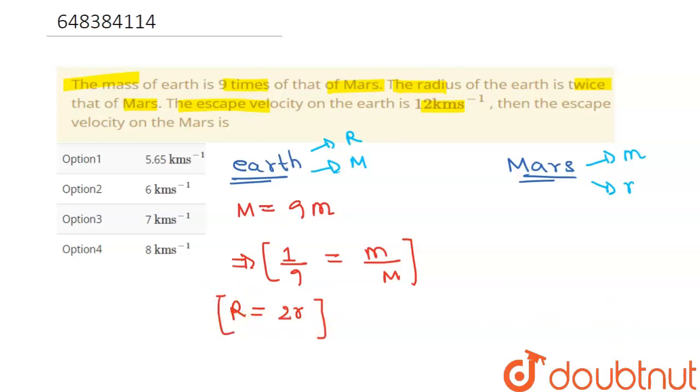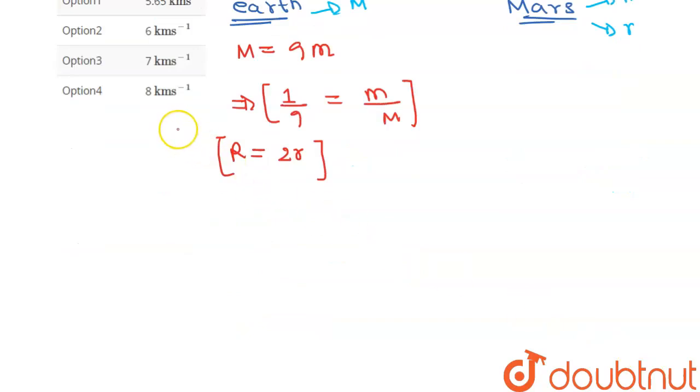Now the escape velocity, the formula for escape velocity is equal to root over 2GM over R. This M is the mass of that planet and R is the radius of that planet. So escape velocity for earth